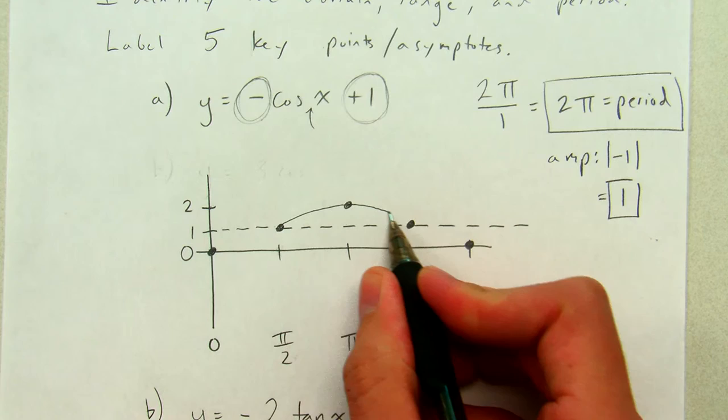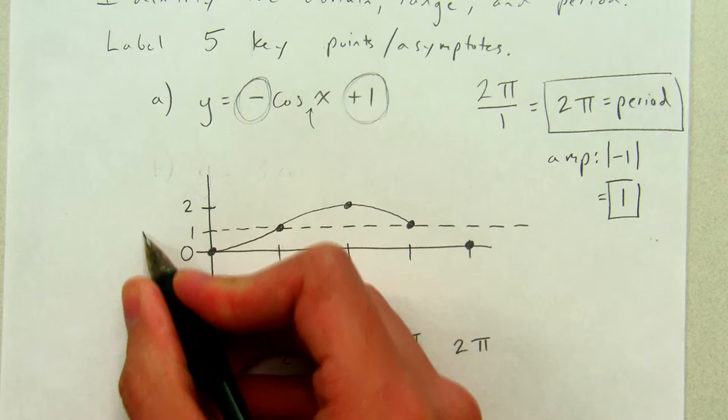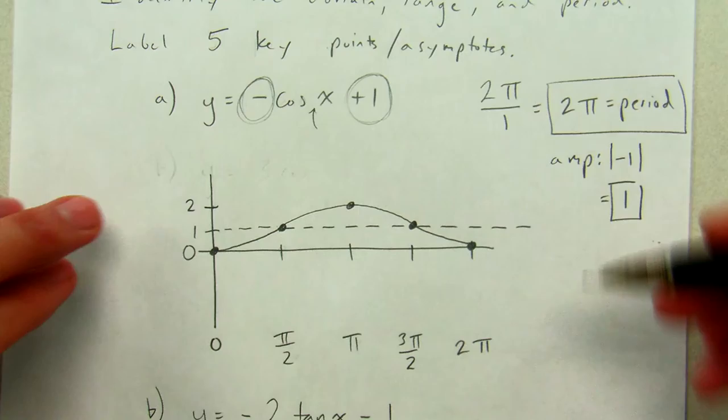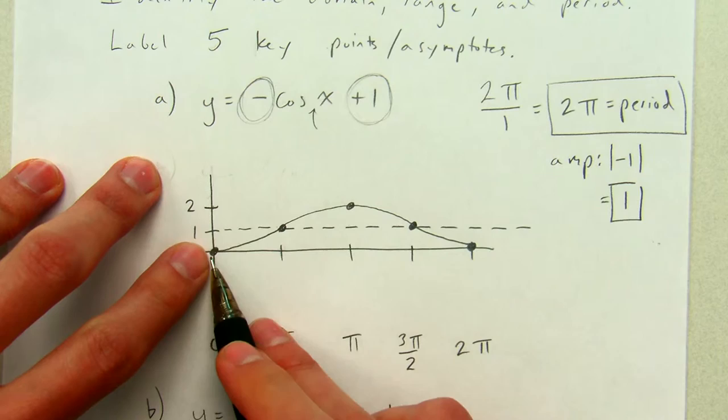It helps a little bit if I think of this as, like, a frowny face above the midline. Aw. And here's a happy face. Ah. But it's only half the happy face. The other half would be over here. Where's the other half? That's pretty good.